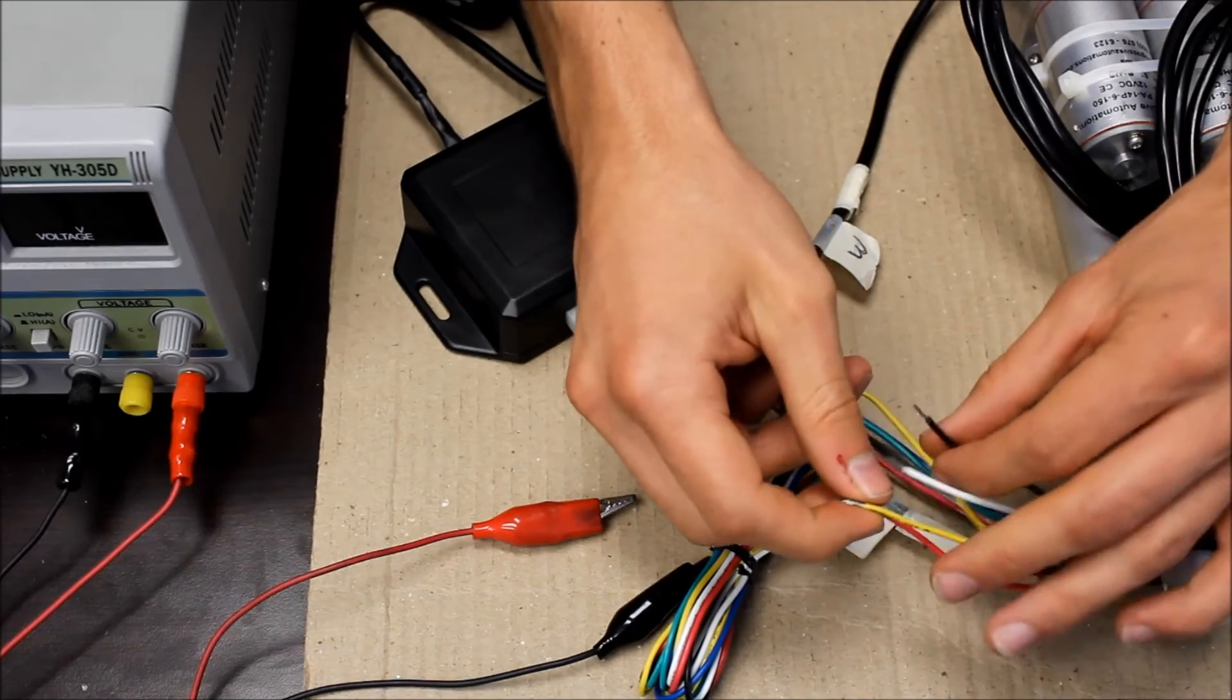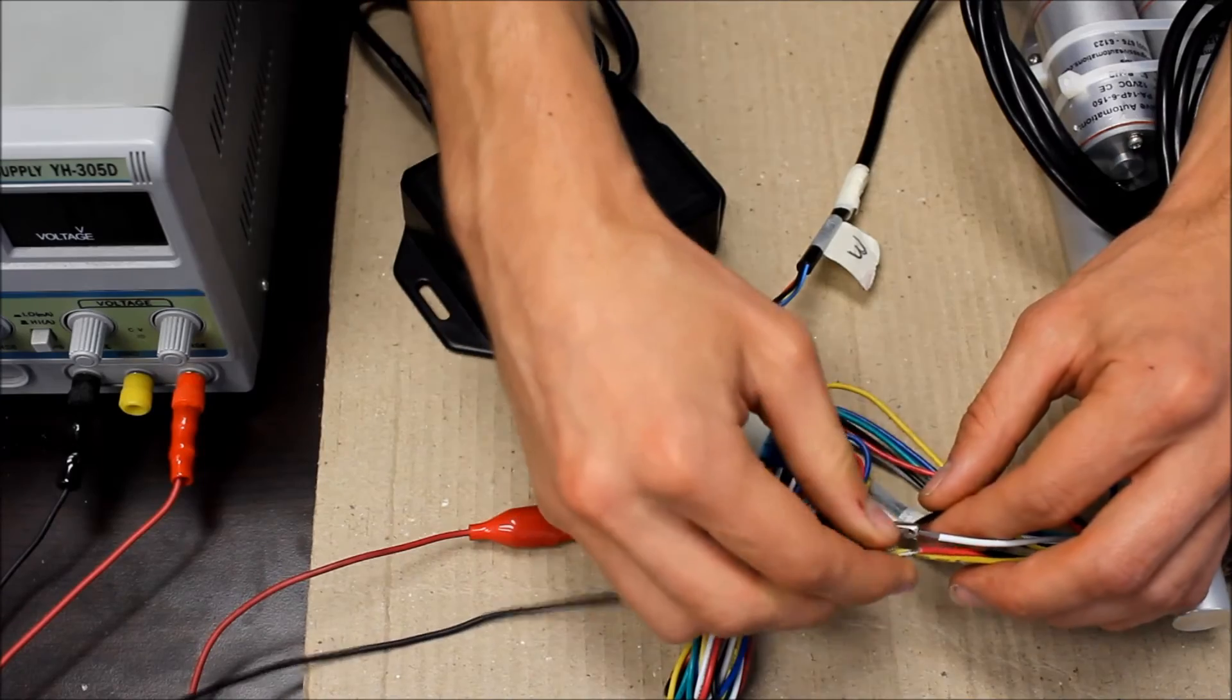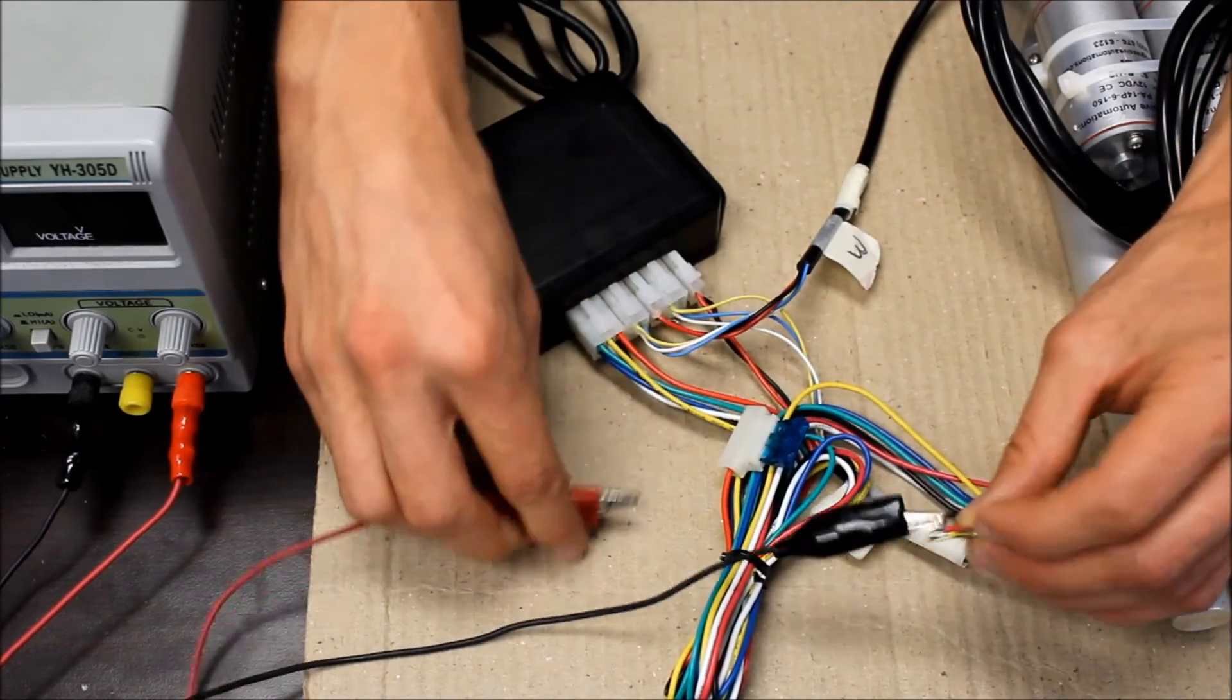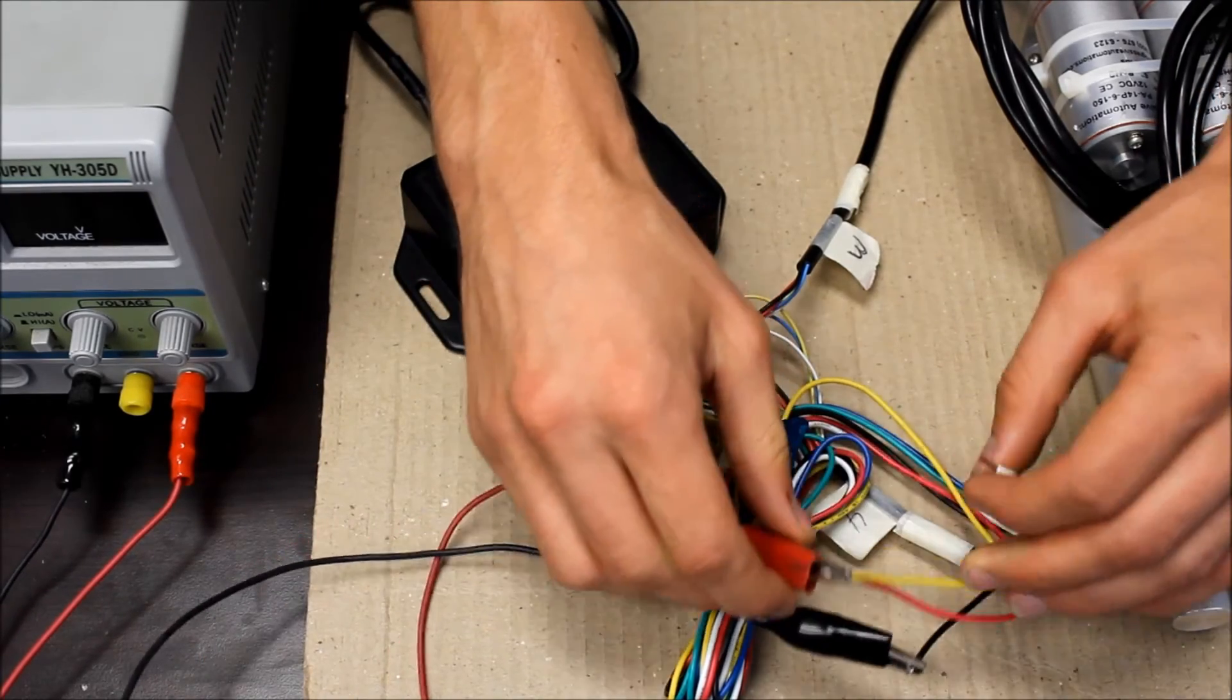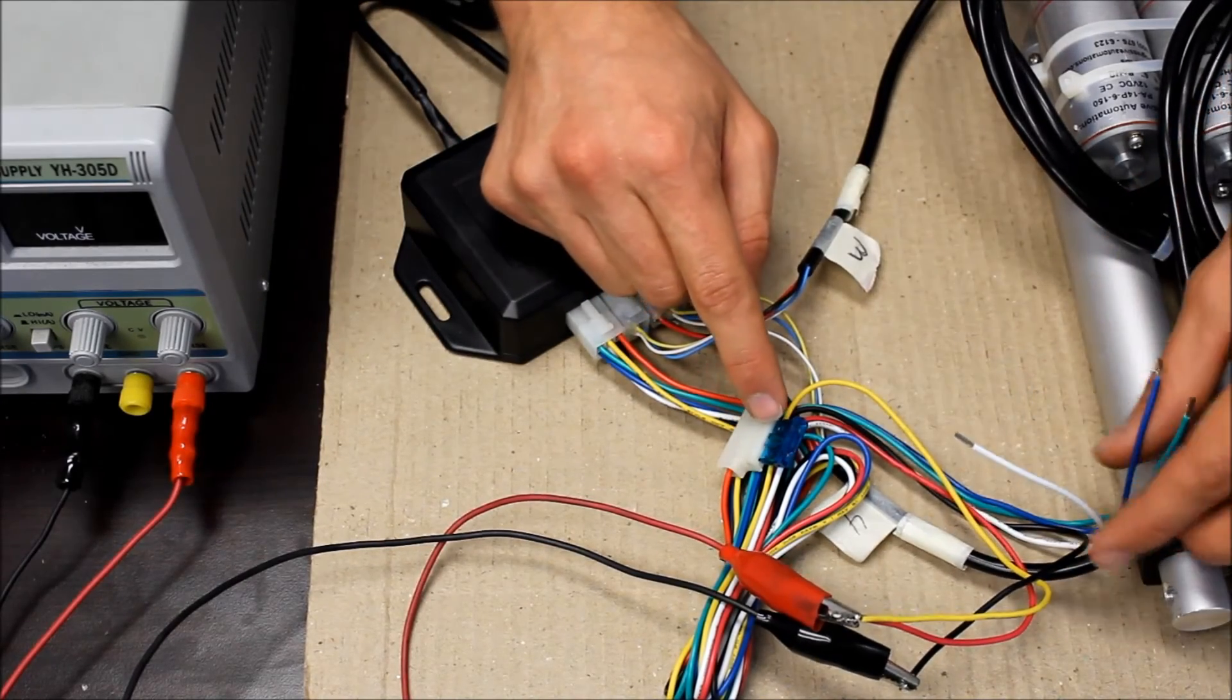So now we have our 12 volt wire and our ground, which we connect to our power supply. On the red wire, we have a 15 amp fuse that's used to protect the system.